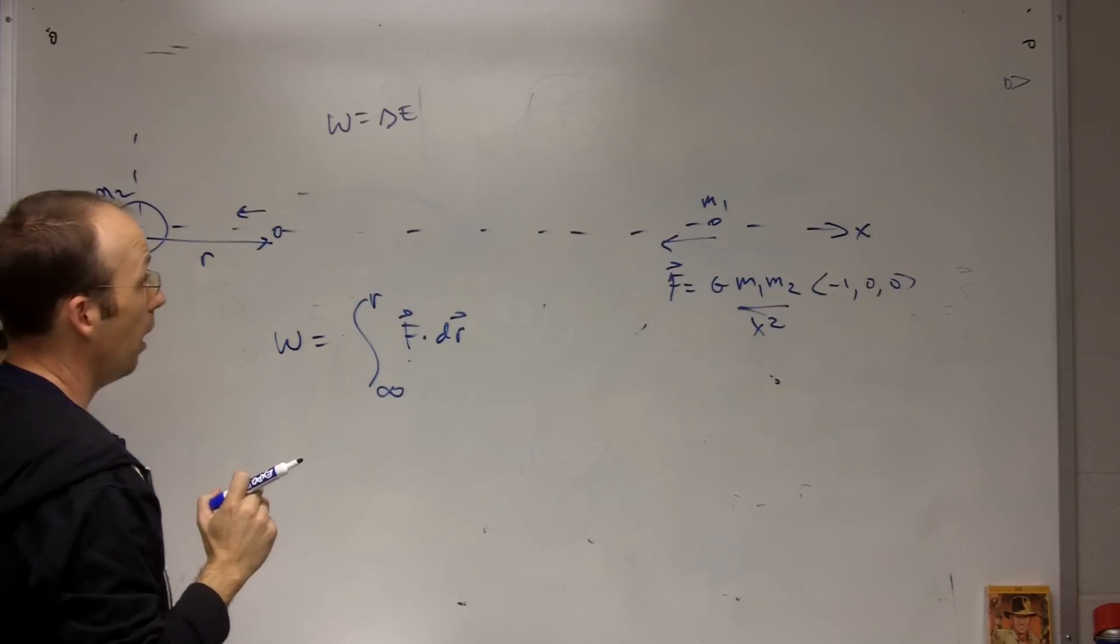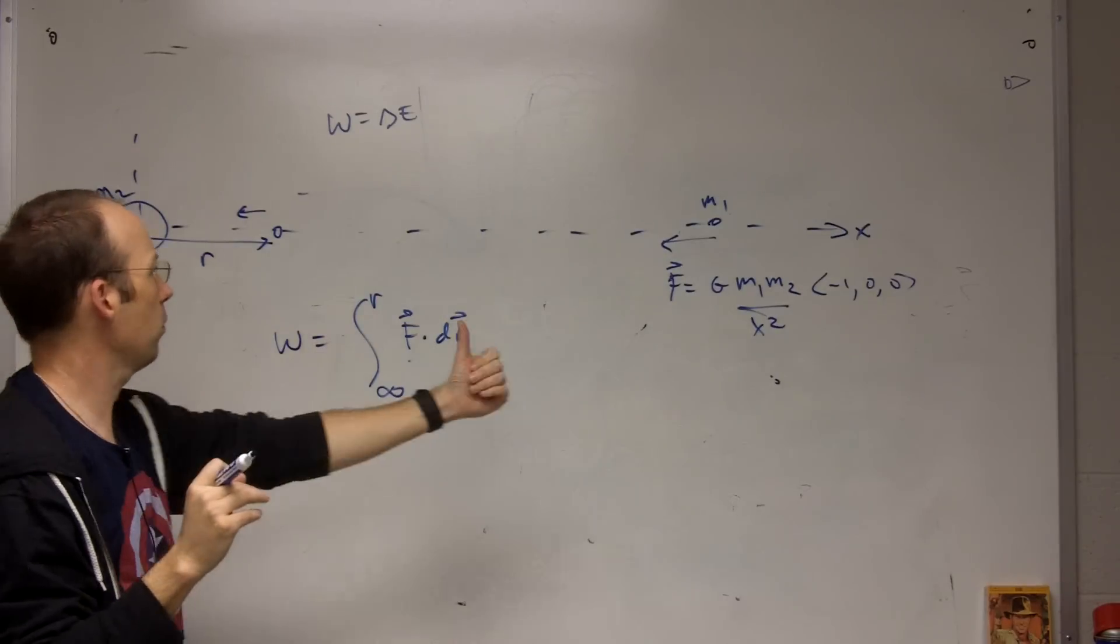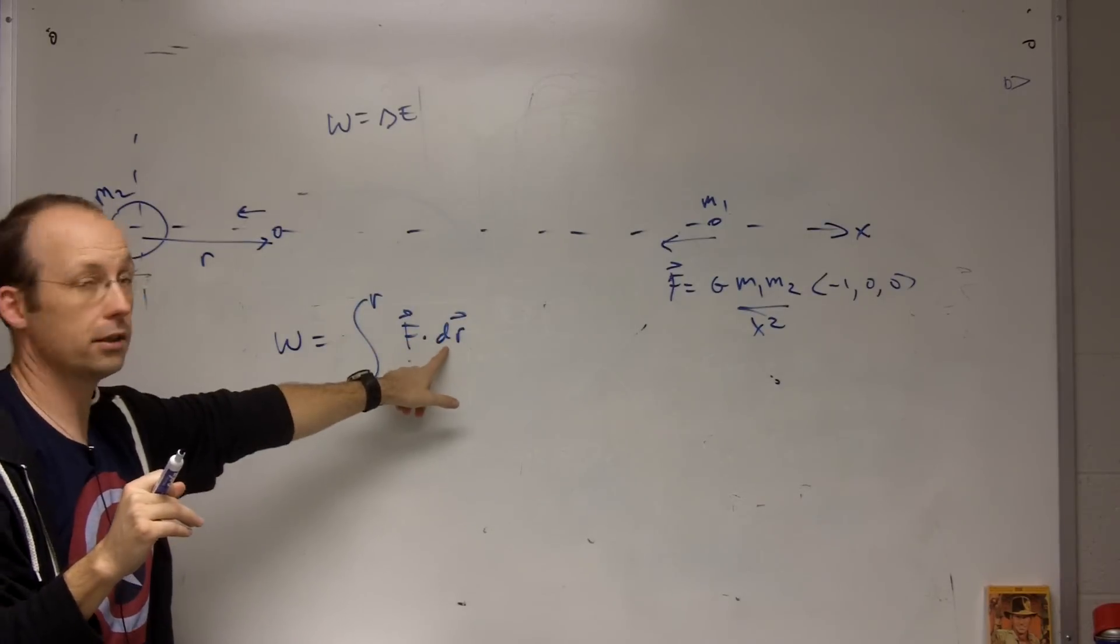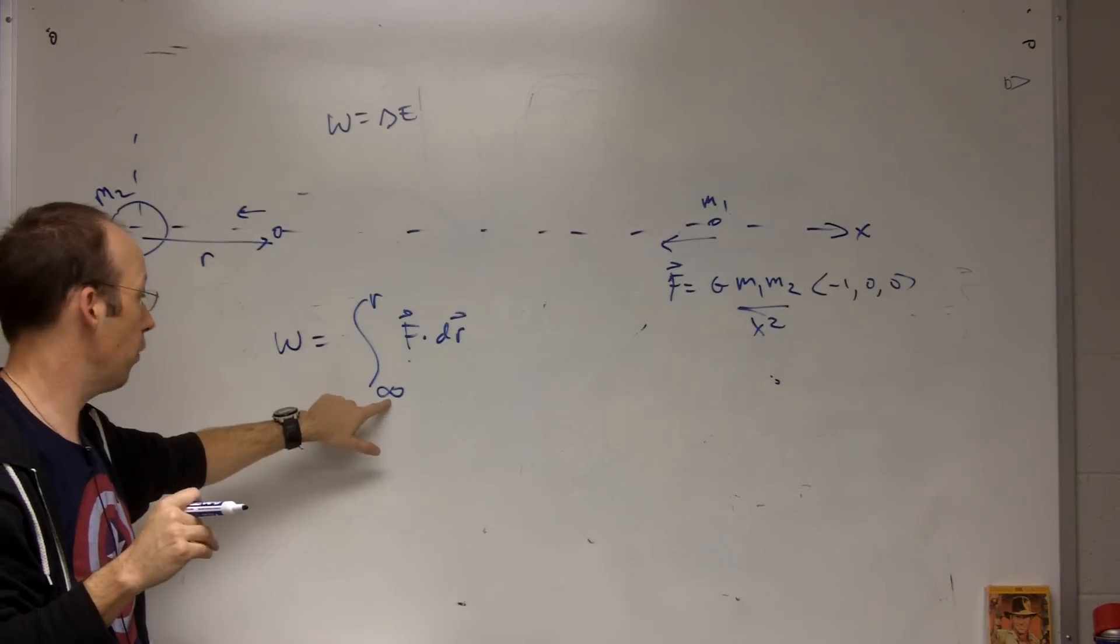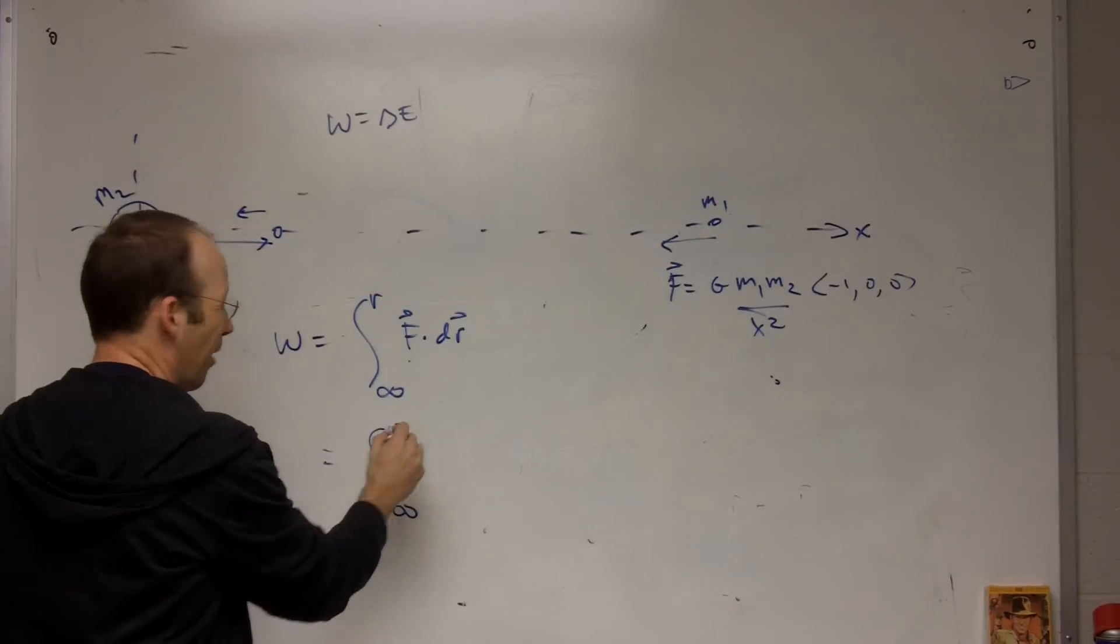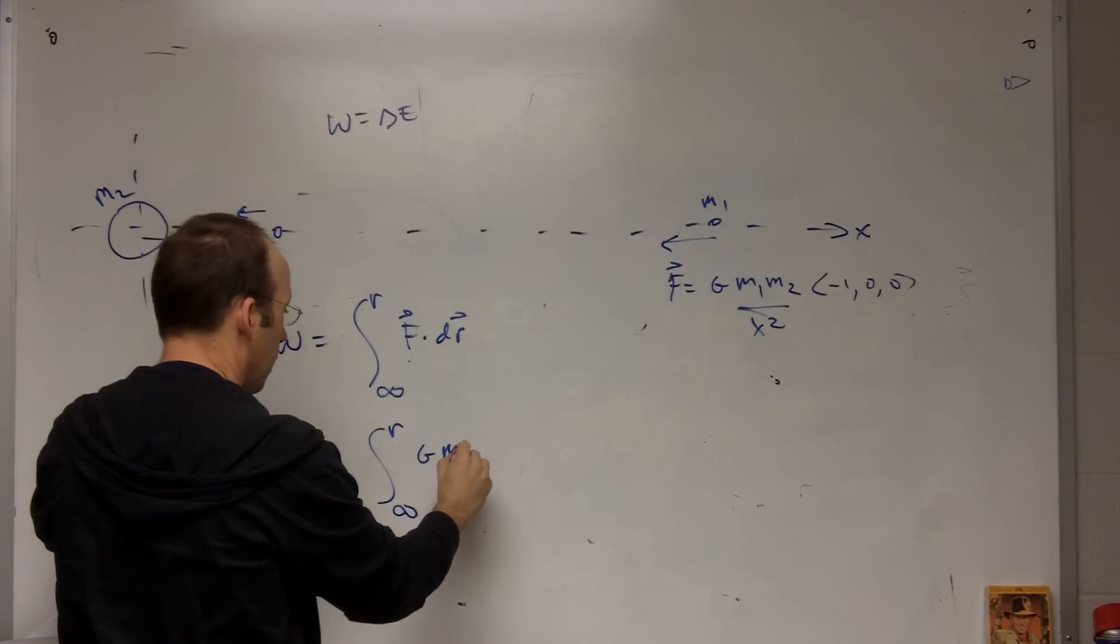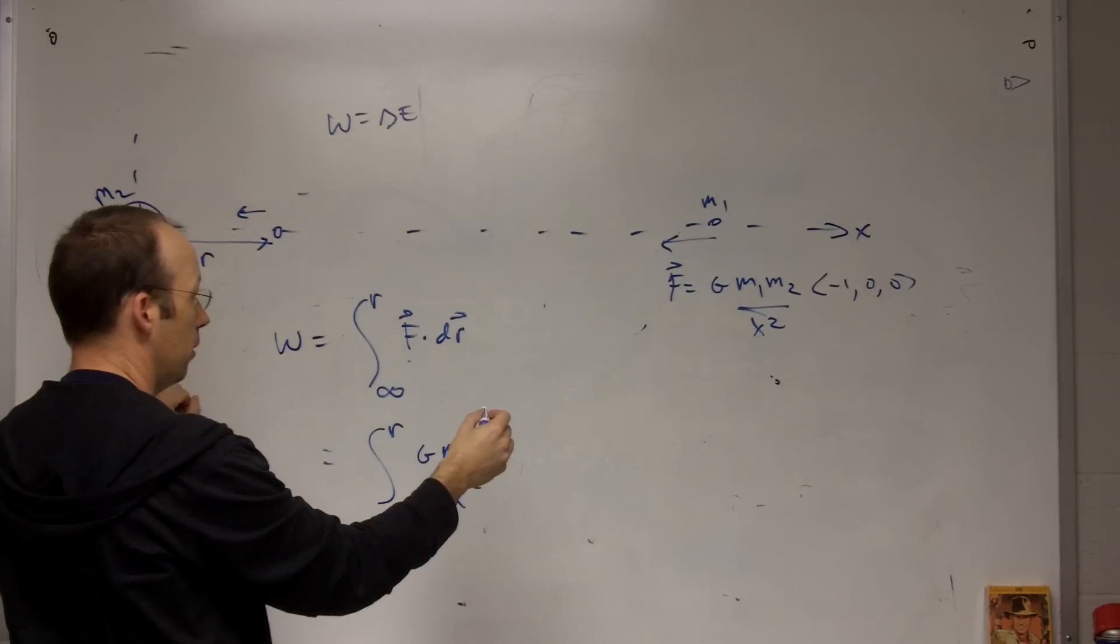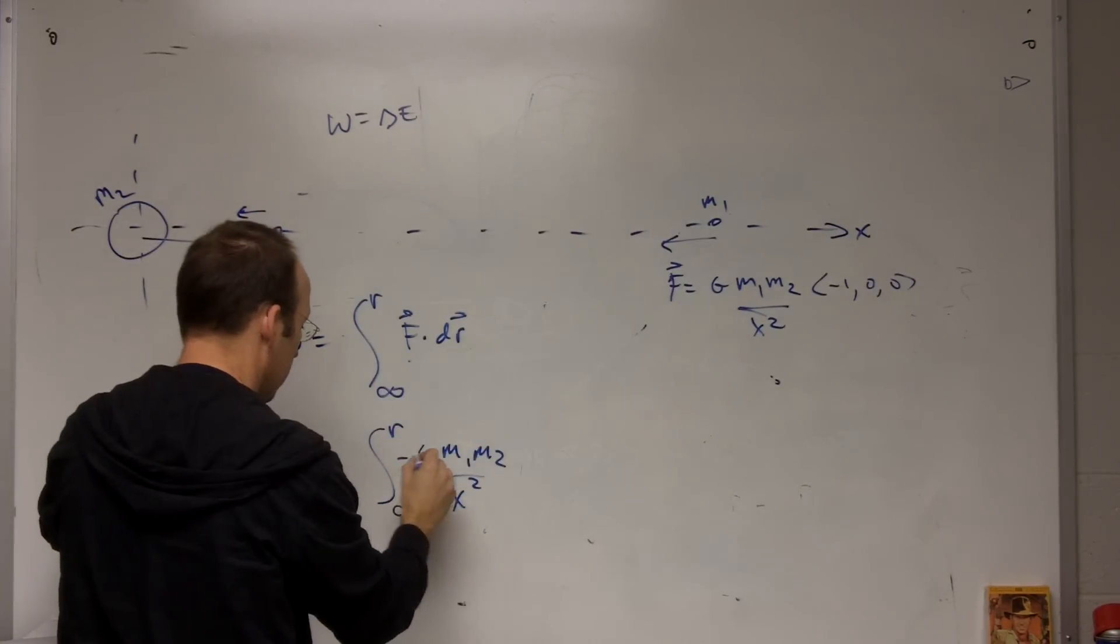Okay, so my d, I've already, this is where I make my mistake. I always say, oh look, dr is negative dx. And so f dot dr is positive. But I've already determined the direction that I'm moving by going from infinity to r. So this is just going to be the integral from infinity to r, I'll probably still mess it up, but hopefully not, of g m1 m2 over x squared negative, because it's in the negative direction, dx.